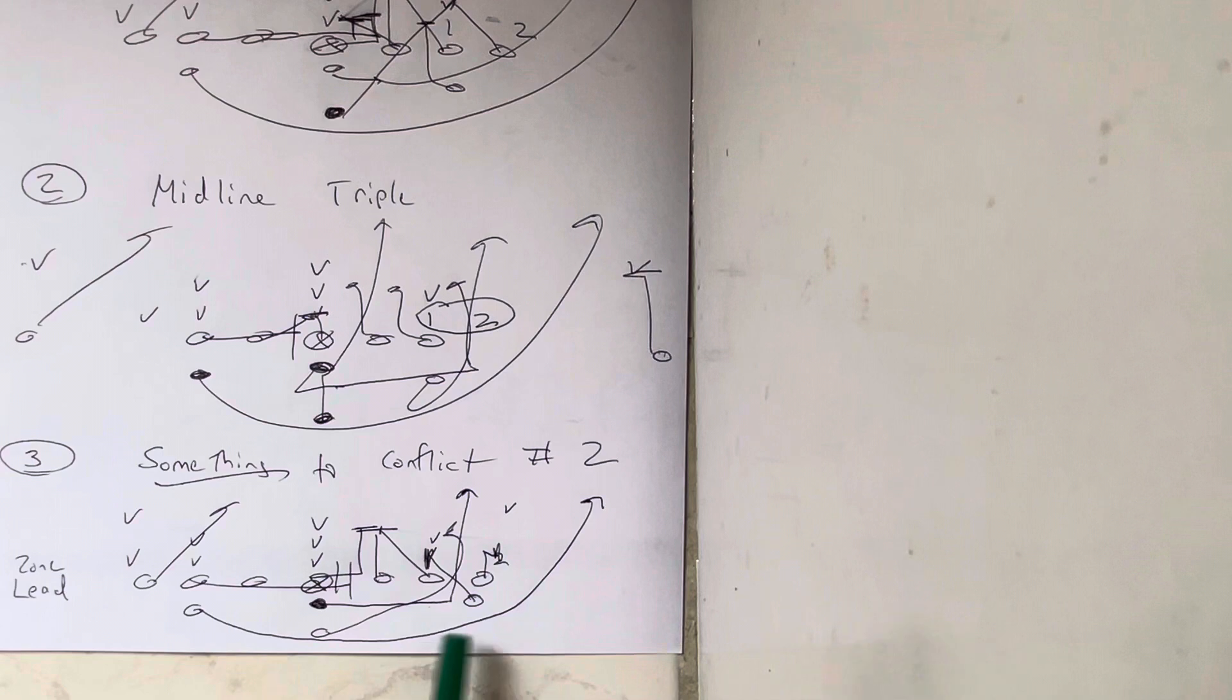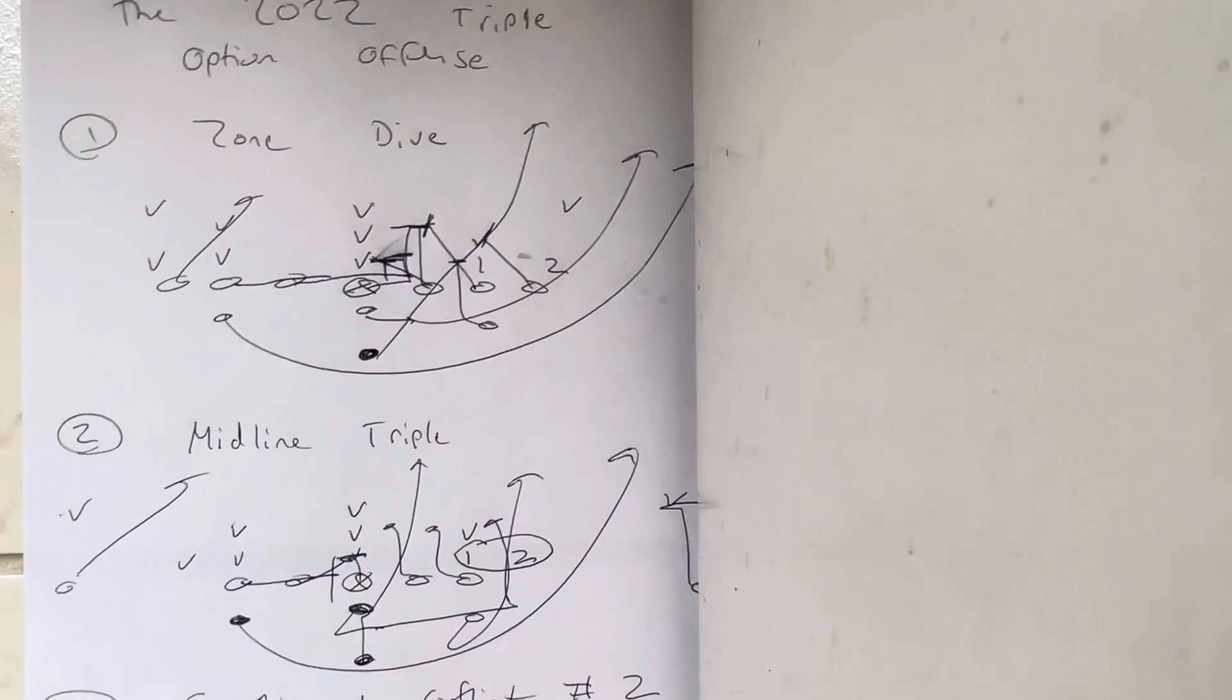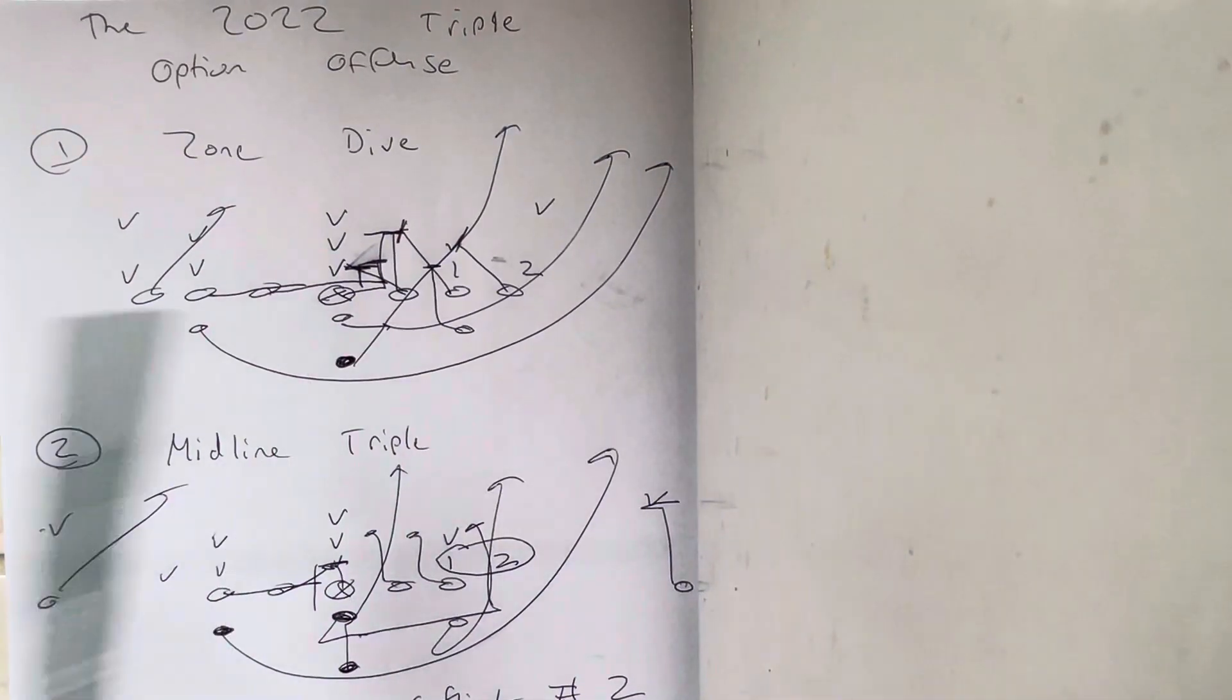But the whole point is, if this guy's running to the pitch, they use his momentum against them. And run the ball between number one and number two. Any way you slice, dice, whatever.